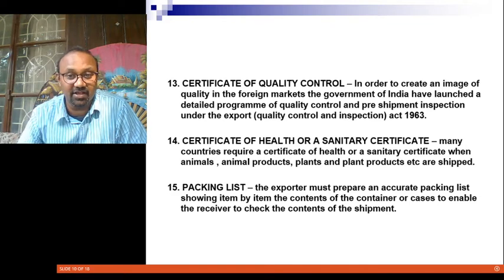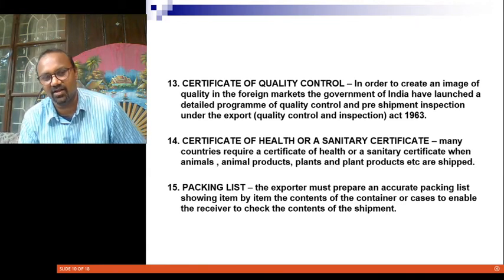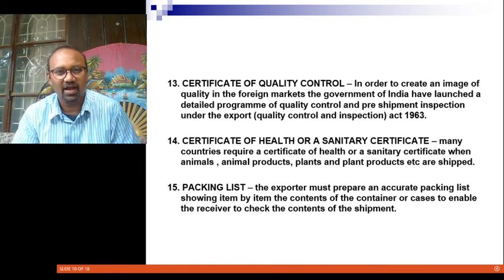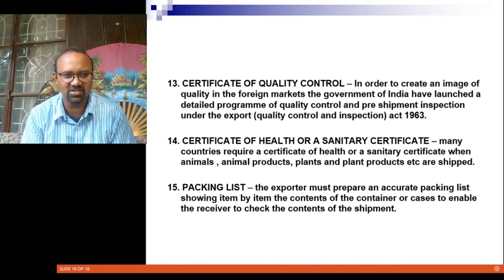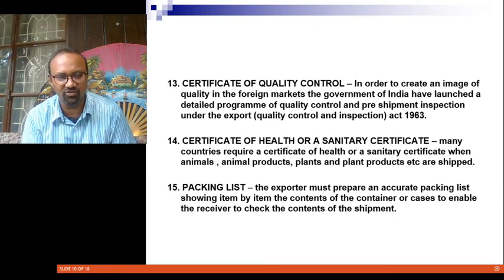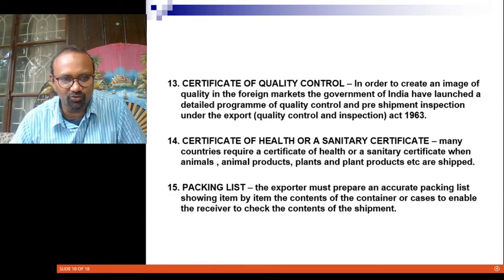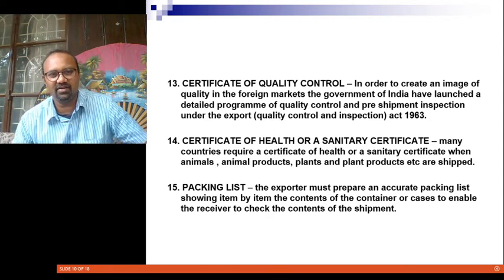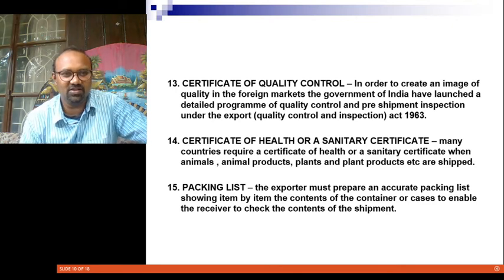If we are dealing with animal products, plant products, or anything related to living insects or other living animals, then we need the Certificate of Health or Sanitary Certificate. That is an optional document only required for animal goods, dairy-related products, or anything of that sort being shipped. Then you have the Packing List — the exporter must prepare an accurate packing list containing the list of items exported and the total quantity for each item. When the importer takes custody, they will verify the packing list, check it against the commercial invoice, physically count the goods, and if everything tallies, they take custody and confirm receipt.